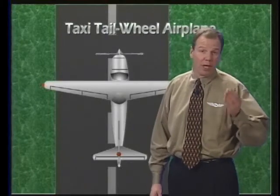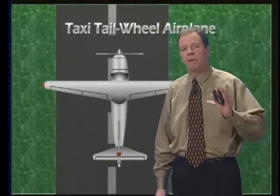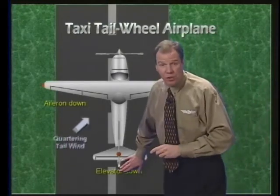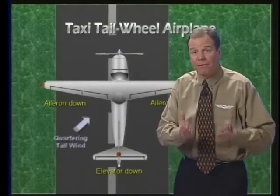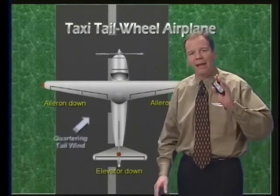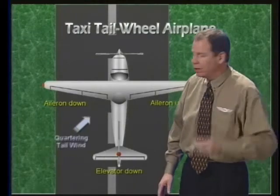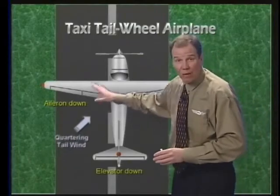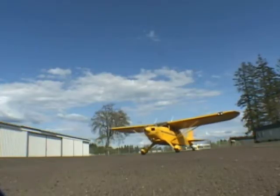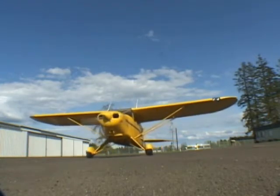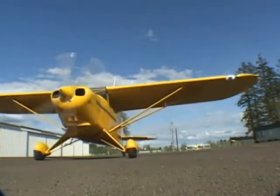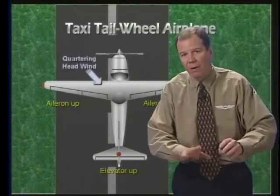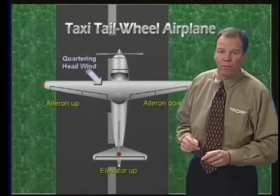Suppose you're flying a tailwheel-type or tail-dragger airplane. When experiencing a strong quartering tailwind, the elevator should be held in the down position. This keeps the tail down and keeps it from lifting up off the ground. The aileron from the side in which the wind is blowing should be held in the down position, so the air flowing over it will force that wing down. Now, when the tailwheel-type airplane is being taxied into a strong quartering headwind, the elevator is in the up position, which pushes the tail down onto the ground, and the upwind aileron should be up.